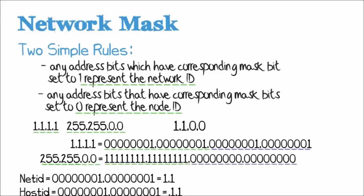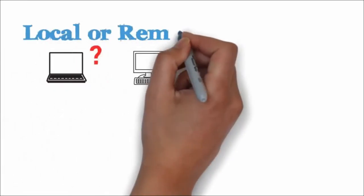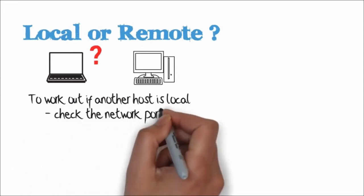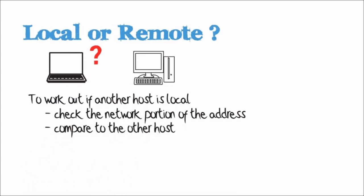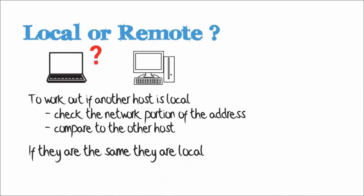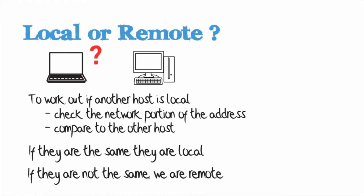In this example, it's easy to see the network portion because we have 255.255 in the network mask. Just be aware that things can get a lot more complicated in the subnetting videos, where it's more difficult to determine which portion is network and which is host. In summary, how does a device know whether another device is local or remote? The device checks the network portion of its local address and compares it to the address of the other host. If the network portion is the same, the local device knows the other device is local. If not, it knows the other device is remote.